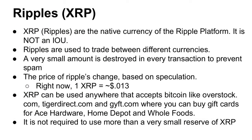XRP — Ripples — are the native currency of the Ripple software. It is not an IOU; it's the only currency in the Ripple system that's not an IOU. Ripples are used to trade between different currencies and between different webs of trust. If you don't trust someone, you can still send them payments even if they're not in your trust network using XRP. A very small amount of Ripples are destroyed in every transaction to prevent spam — about .001 Ripple per transaction — and it's destroyed, not given to any party. The price of XRP changes based on speculation.